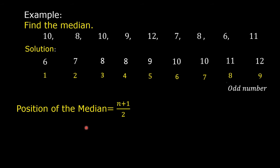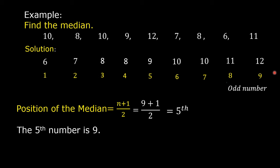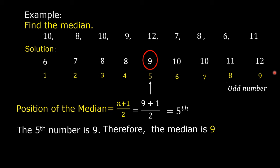Since n is odd, use the formula: position of the median = (n+1)/2, where n = 9. So we have (9+1)/2 = 10/2 = 5, so the median is in the 5th position. The 5th value in the arranged data is 9. Therefore, the median is 9.